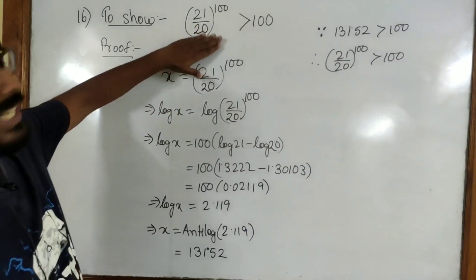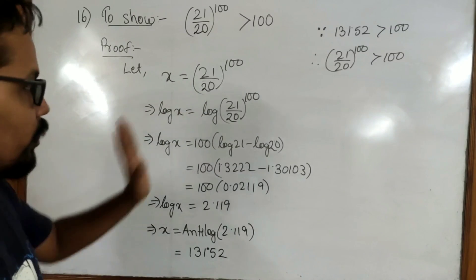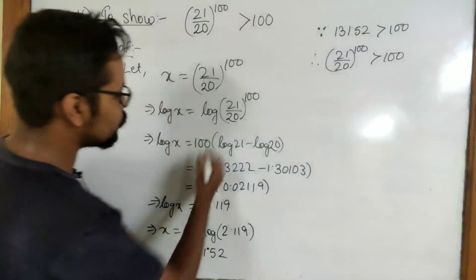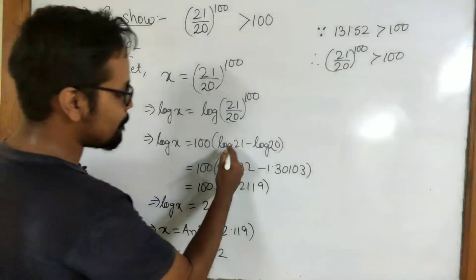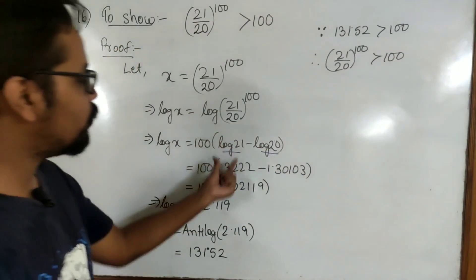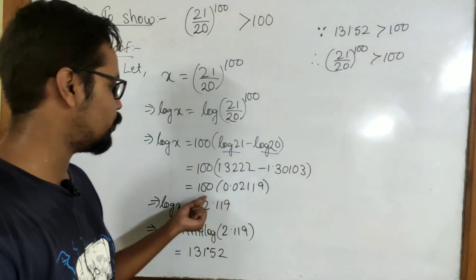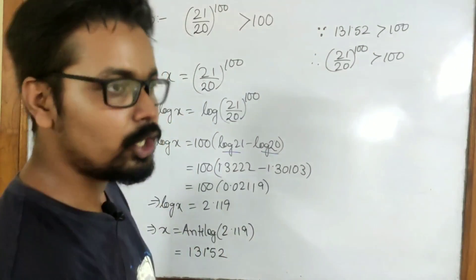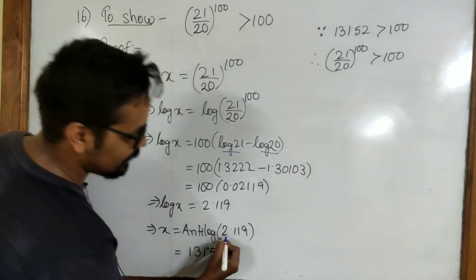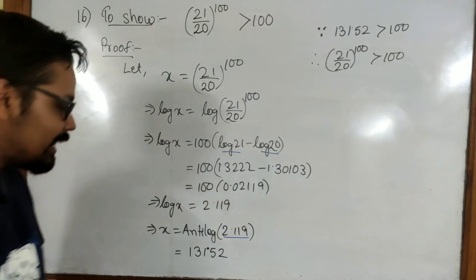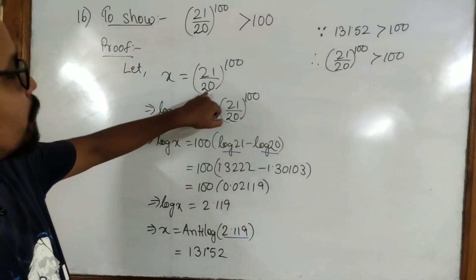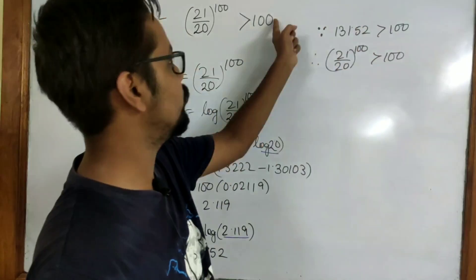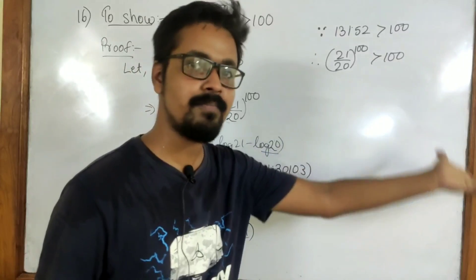We took log on both sides. 100 comes out in front, and we apply log m by n equals log m minus log n. We find the value of log 21, subtract the value of log 20, multiply by 100, and get 2.119. Then we find the antilog of 2.119 and get the value 131.52. That means 21 by 20 whole to the power 100 equals approximately 131.52, which is greater than 100. So obviously 21 by 20 to the power 100 is greater than 100.